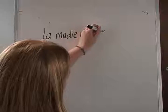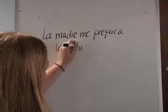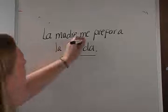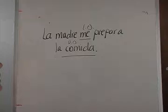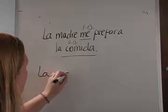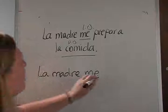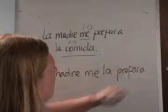La madre me prepara la comida. What does she prepare? She prepares la comida — this is your direct. Who does she prepare it for? She prepares it for me — this is your indirect. We need to rewrite this sentence replacing our objects with object pronouns. We would end up with: la madre — indirect comes first — me, then your direct: la comida is singular and feminine, so we use la. La madre me la prepara. The way you would read this is: mom prepares it for me.